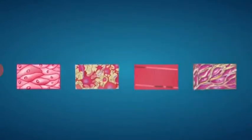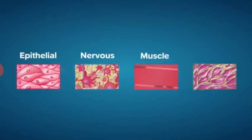Animal tissues are grouped into four basic types: epithelial, nervous, muscle, and connective tissues.